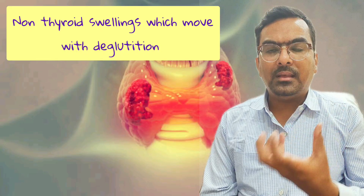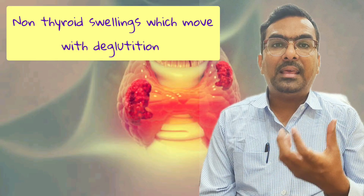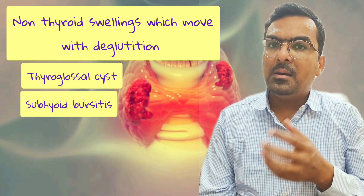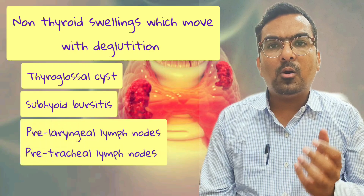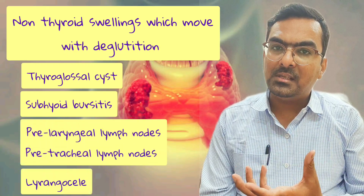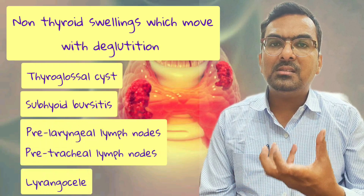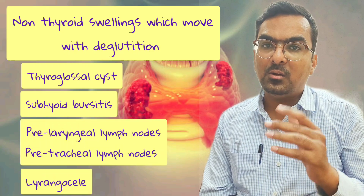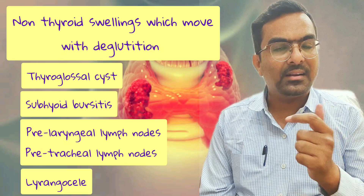Now let's see other swellings which also move with deglutition, not only thyroid swellings. A few other examples include thyroglossal cyst, subhyoid bursitis, pre-laryngeal or pre-tracheal lymph nodes, and laryngoceles. These swellings also move due to their connection to the larynx and trachea.